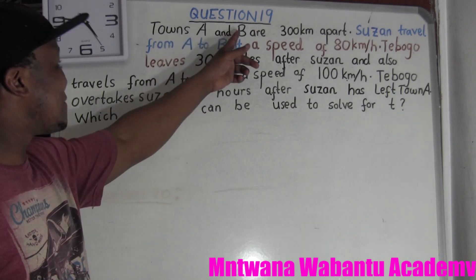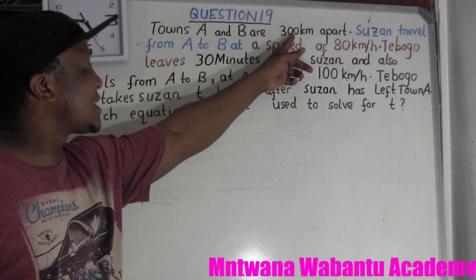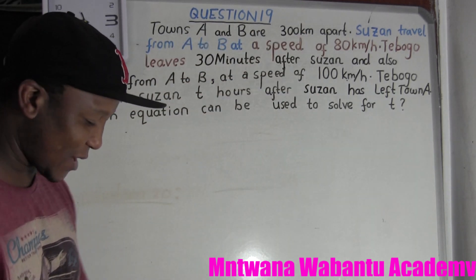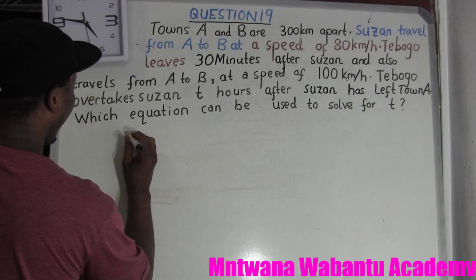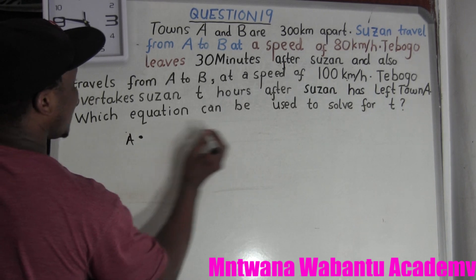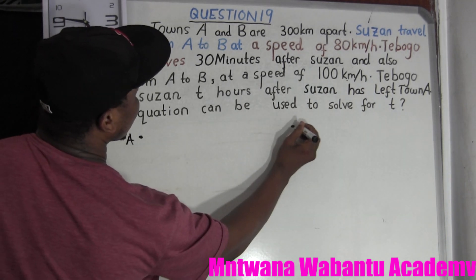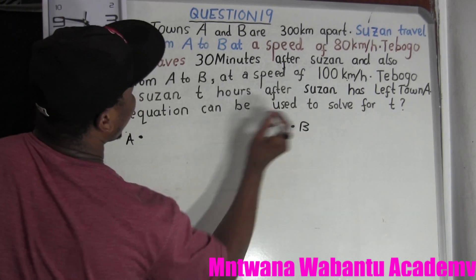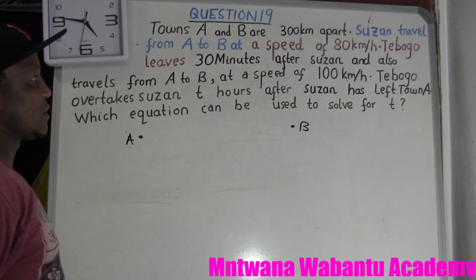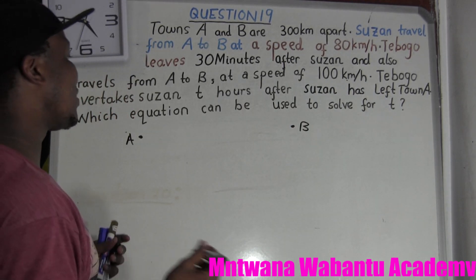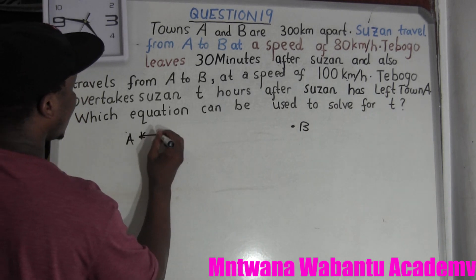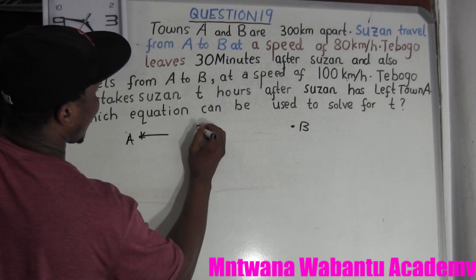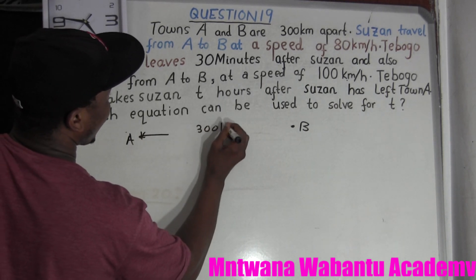So town A and B are 300 km apart. Let's show this: town A and town B, 300 km apart. So from here to there, 300 km.